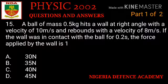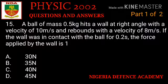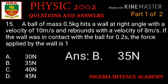Question number fifteen: a ball of mass 0.5 kg hits a wall at right angles with a velocity of 10 m/s and rebounds with a velocity of 8 m/s. If the wall was in contact with the ball for 0.2 seconds, the force applied by the wall is what? Option A: 30. Option B: 35. Option C: 40. Option D: 45. The right answer is option B — 35.